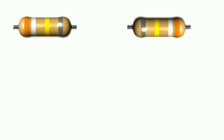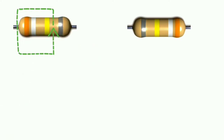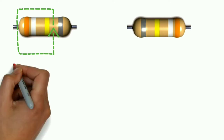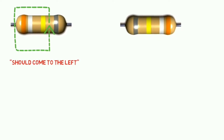That's why I will tell you three things to help identify the correct reading orientation. First, the color bands are grouped close together on one side. Second, there is a gap or distance between the last band and the tolerance band. Third, metallic bands — that is, gold or silver colored bands — indicate the tolerance and appear on the right-hand side.